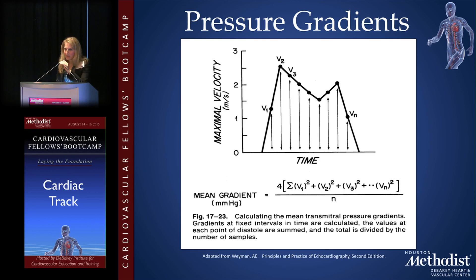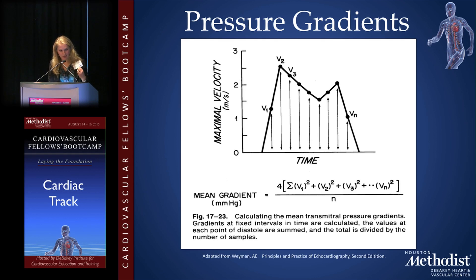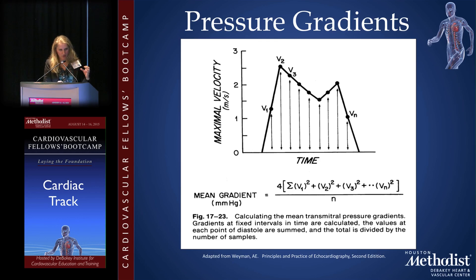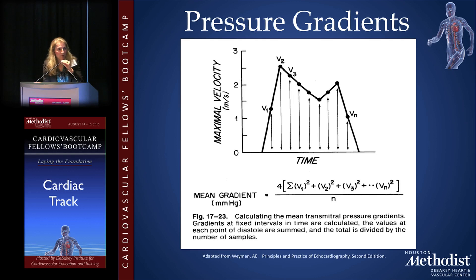To determine severity of mitral stenosis, we have two methods. The first is Doppler, which allows us to measure mean gradients across the valve using the modified Bernoulli equation — measuring all the 4V-squared values beneath the stenotic jet. We trace the CW jet in the echo lab and it calculates the mean gradient. A mean gradient less than 5 is mild mitral stenosis, 5 to 10 is moderate, and greater than 10 is severe.